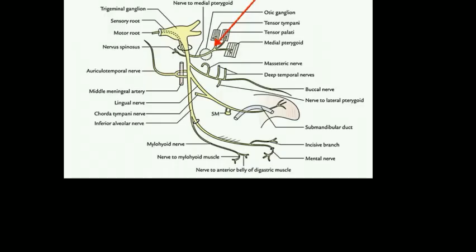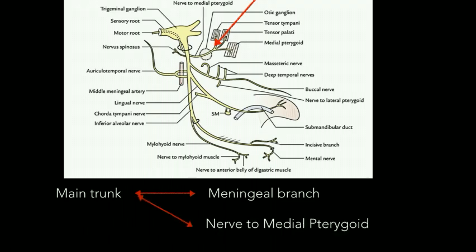The mandibular nerve begins in the middle cranial fossa through a large sensory root and a smaller motor root to form a main trunk, which leaves through the foramen ovale. This main trunk lies in the infratemporal fossa and, before dividing into the anterior and posterior divisions, gives out two branches: the meningeal branch and the nerve to medial pterygoid. You can also see this in the diagram. To remember these, use the mnemonic M3 — M from main trunk, M from meningeal branch, and M from medial pterygoid.